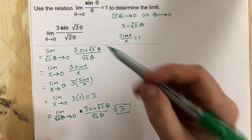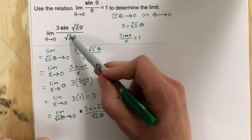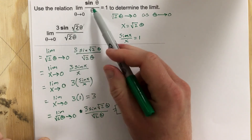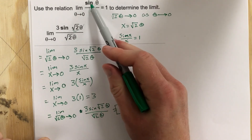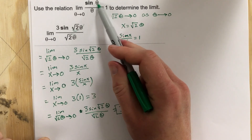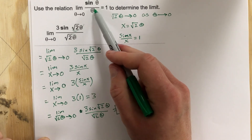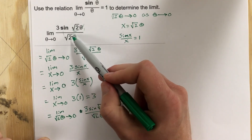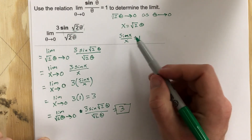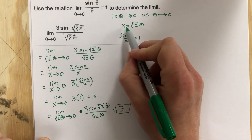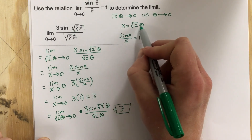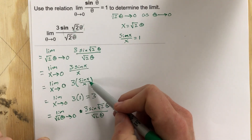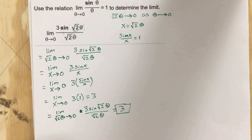So long story short, you've got the same expression inside the angle that's being divided in the denominator. This relation says that sine of whatever's on the inside divided by whatever is on the inside is equal to 1. So you can essentially replace this with 1. The algebra to do that is setting x equal to root 2 theta, replacing each of those pieces with x, and then replacing sine x over x with 1.